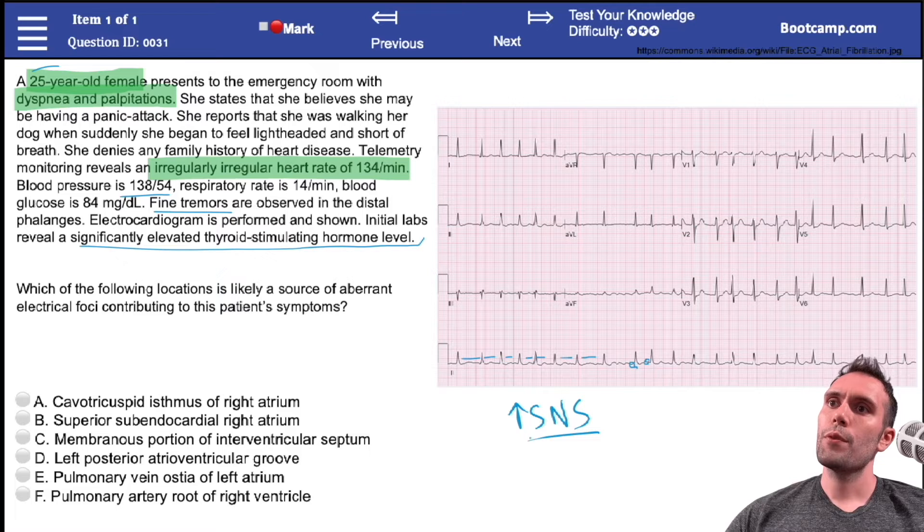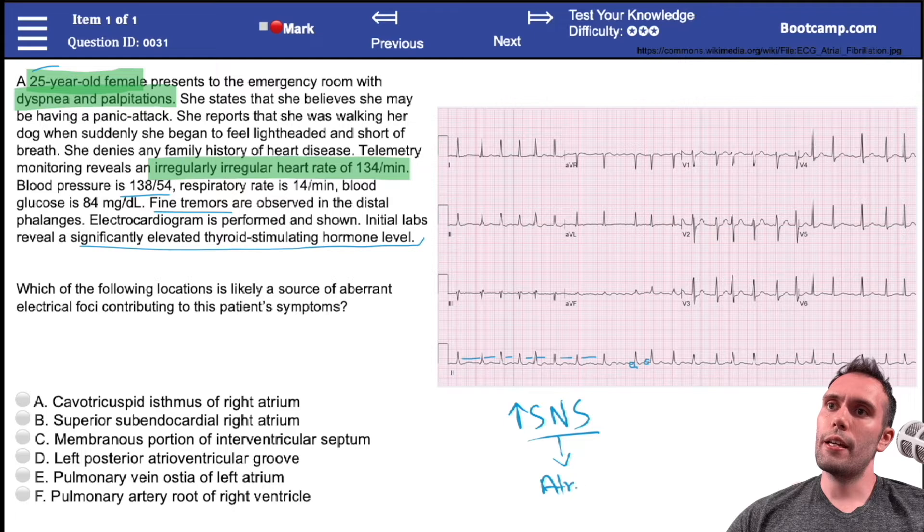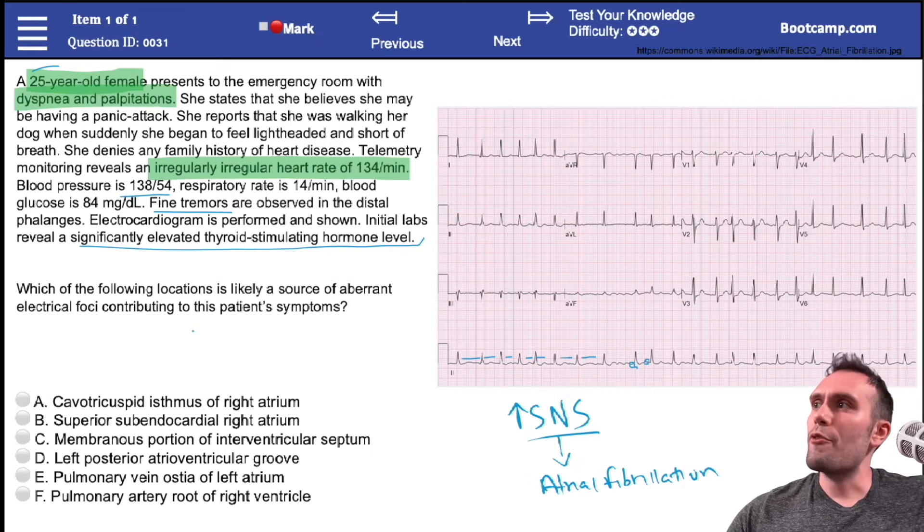Your sympathetic nervous system is going to be upregulated, and the concept here is because of that, this can predispose these patients to developing atrial fibrillation. There's actually a very clear association with atrial fibrillation and hyperthyroidism.